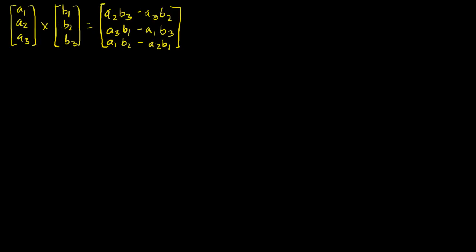The goal of this video is to start with our definition of the cross product and the result that we got to in a different video — I think it was three videos ago — where we found out that the dot product of two non-zero vectors, a dot b, is equal to the product of their lengths times the cosine of the angle between them.